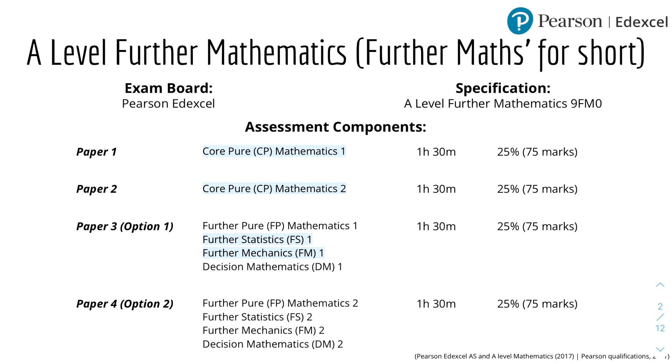So we'll look into some information. The exam board I'll be using or I'll be following is the Pearson Edexcel or just Edexcel, and the specification is A-Level Further Mathematics 9FM0. So here are some assessment components. There are four papers for the actual A-Level exams, and each of the papers are 75 marks, and each of them contribute to 25% to your final grade. And they are all 1 hour 30 minutes long.